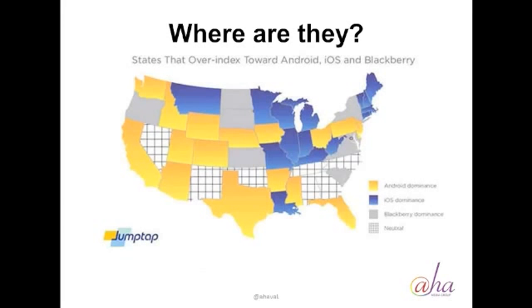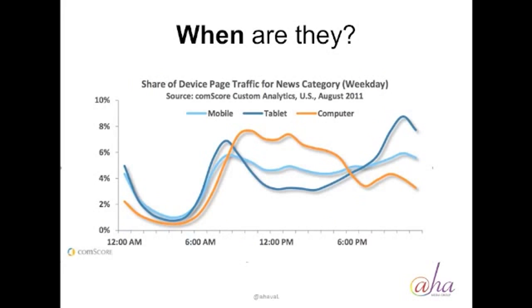Here we see a different map that gives you this information in a different way, showing really the states and where we see Android dominance versus iOS dominance — and iOS is the operating system for Apple. When are they? This graph is really interesting — this data is from Comscore, from August of 2011. Mobile is in the aqua line, tablets are in the dark blue line, and traditional desktop and laptop computers are in the orange line.